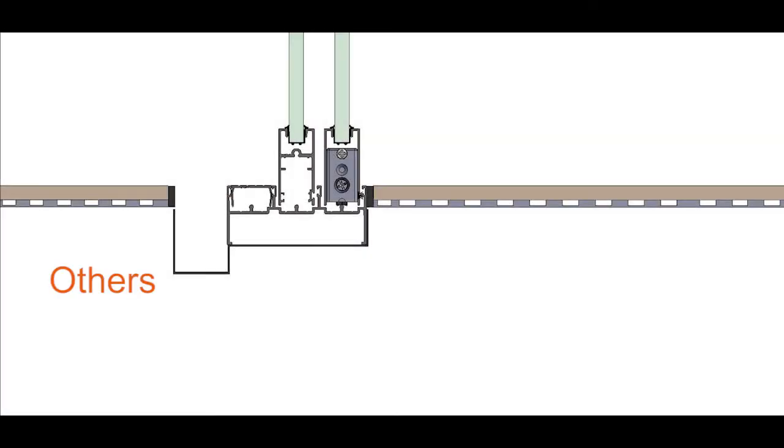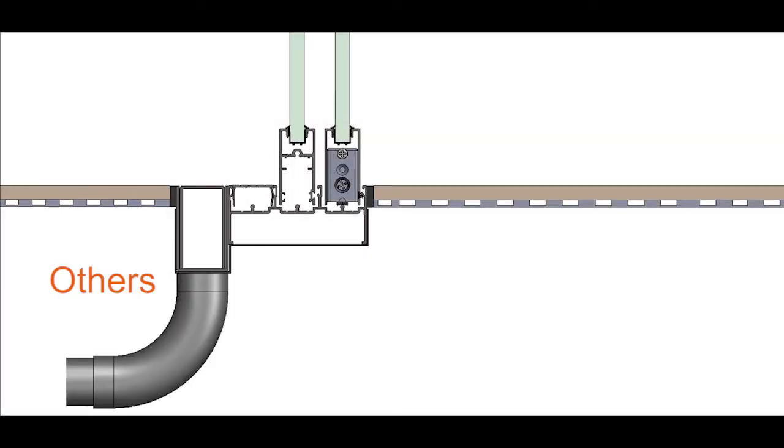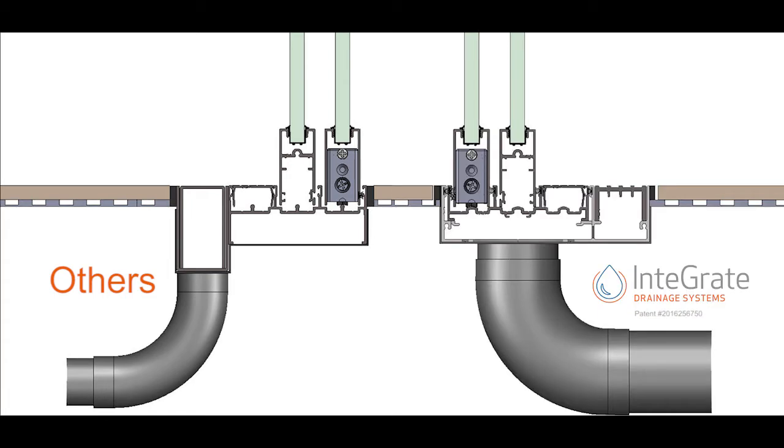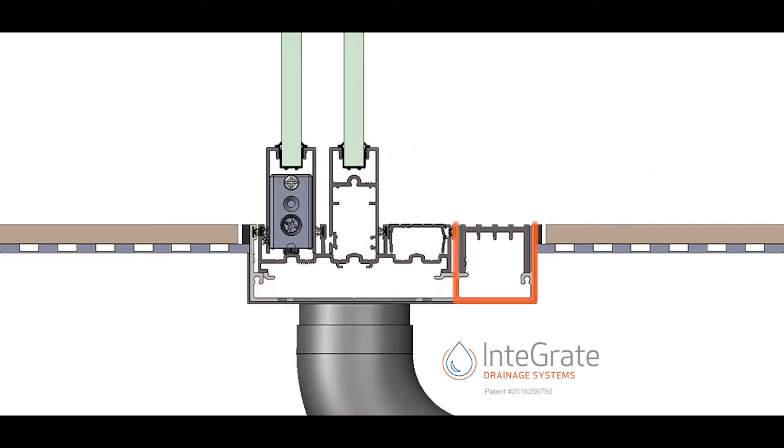Other drainage systems are generally installed separate to the sill. What makes Integrate unique is the combination of a sub-sill and drainage channel merged into an all-in-one drainage sump that guarantees a flush threshold finish every time.